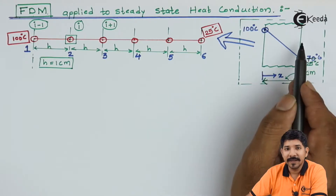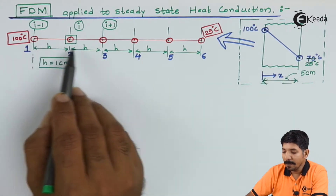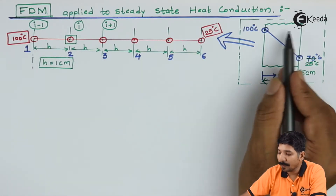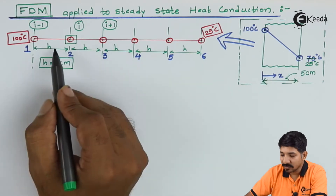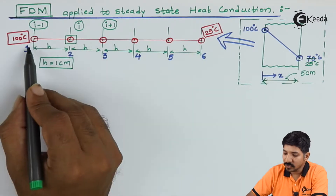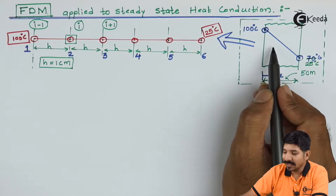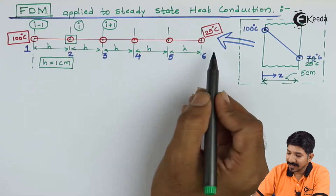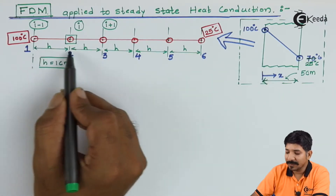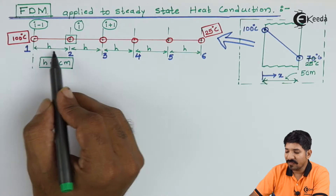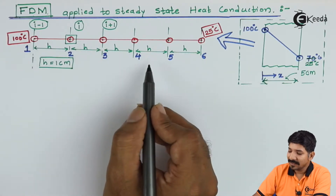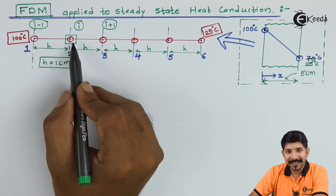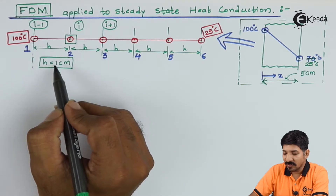We are going to express this slab in terms of 6 nodes, where each node indicates a particle of the slab. The nodes are kept at a distance h from each other, and the value of h is constant everywhere. In this case the value of h is 1 cm, so two nodes are placed at a distance of 1 cm from each other.